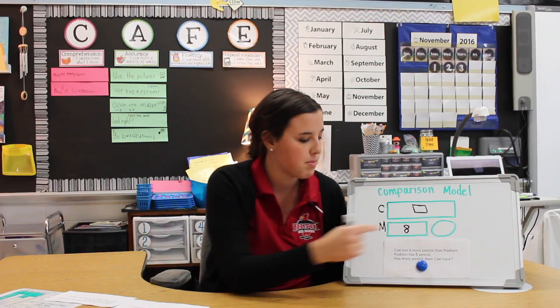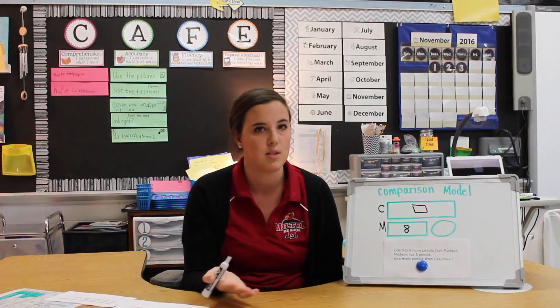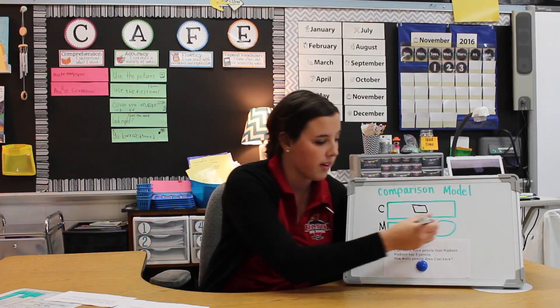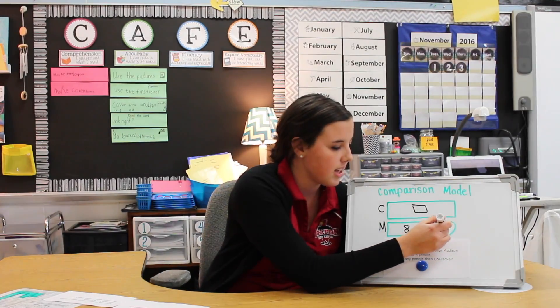We know that the difference between Madison's amount of pencils and Cal's is six because Cal has six more. So in the oval we'll put the difference, which is six.